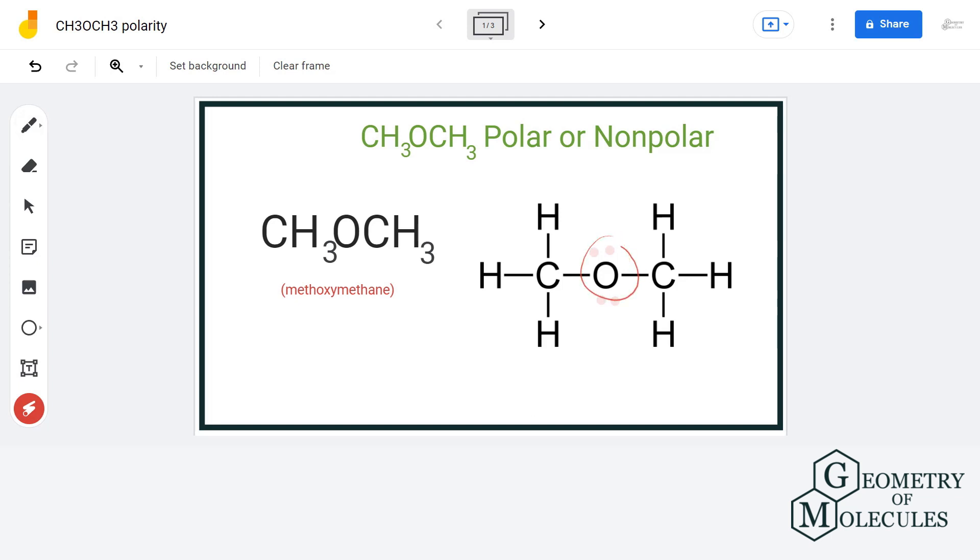As you can see, center atom oxygen has formed bond with two methyl groups, i.e., CH₃ groups, and has two lone pairs of electrons on it.